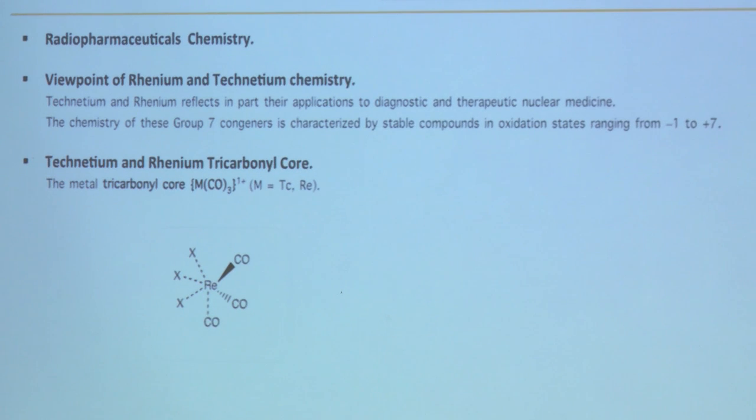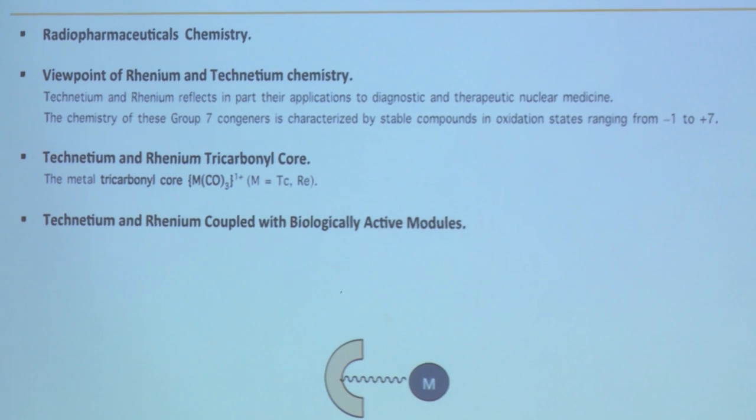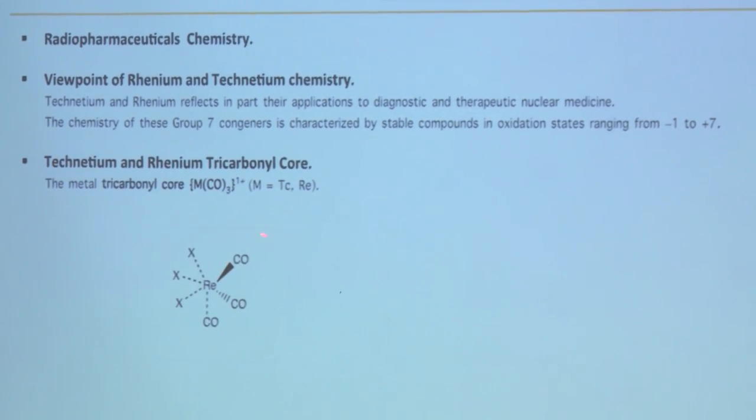Why I use a rhenium tricarbonyl core? This core has d6 low spin electron configuration and high kinetic thermodynamic stability. There are three carbonyls facially arranged. The three carbonyls are facially arranged with three vacant sites in the core.